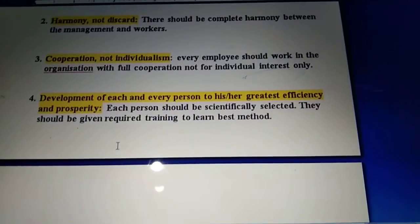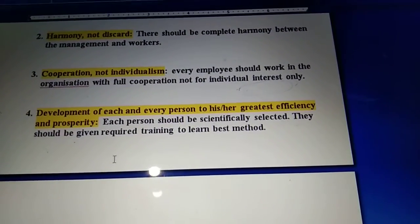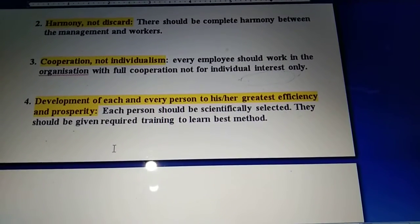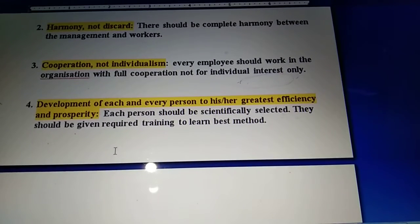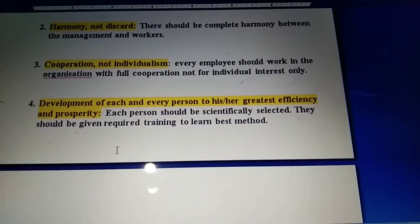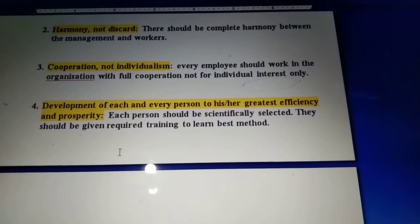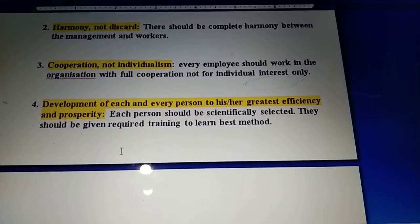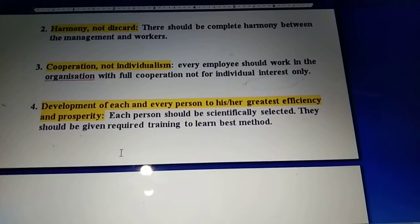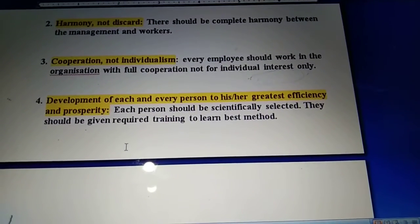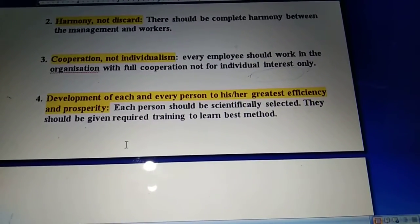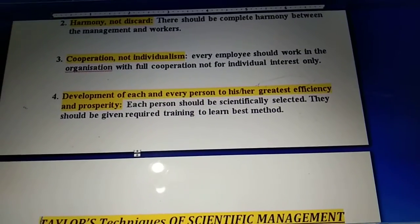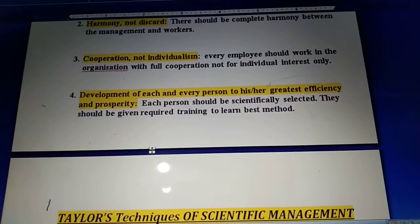The next principle is development of each and every person to his or her greatest efficiency. This principle of Taylor says each person should be scientifically selected and given the required training to learn the best method. Whenever there is appointment of any employee, they should be selected based on a scientific procedure, and once selection is done, employees should be given complete opportunities for training so that development can occur. These are the four principles of Taylor.